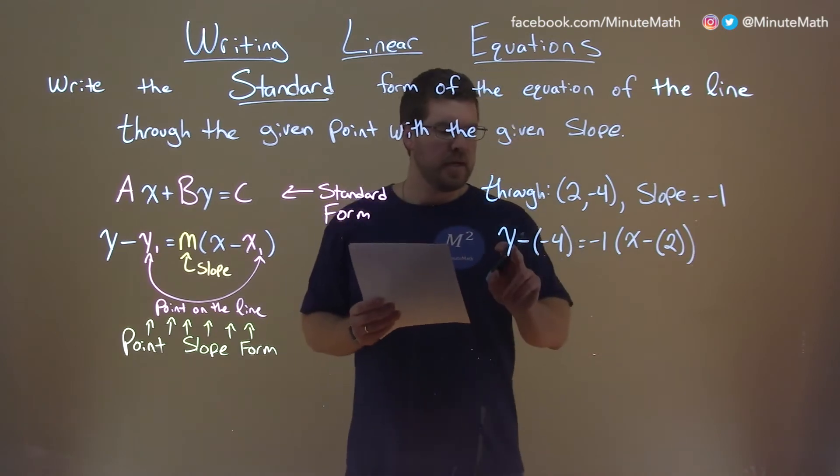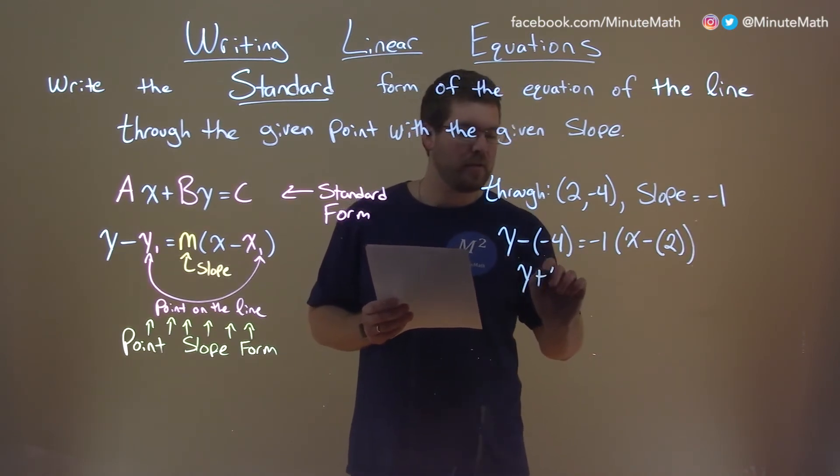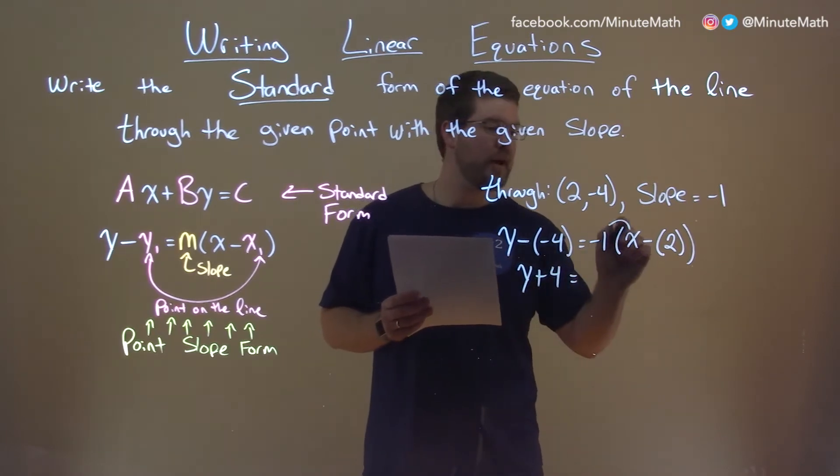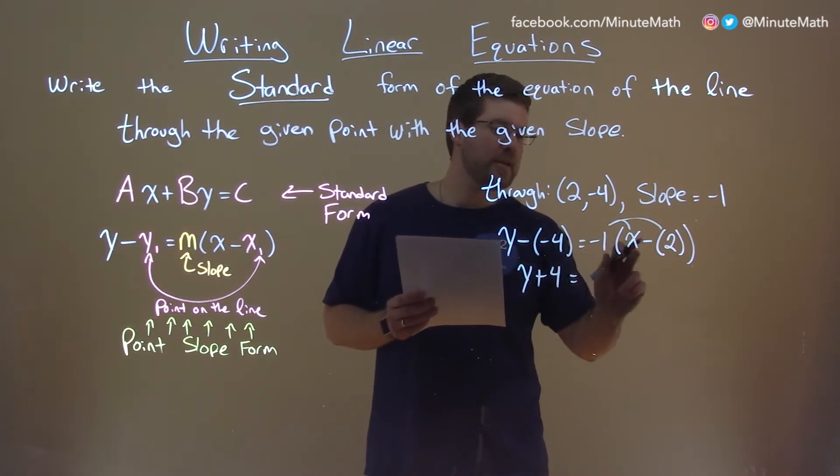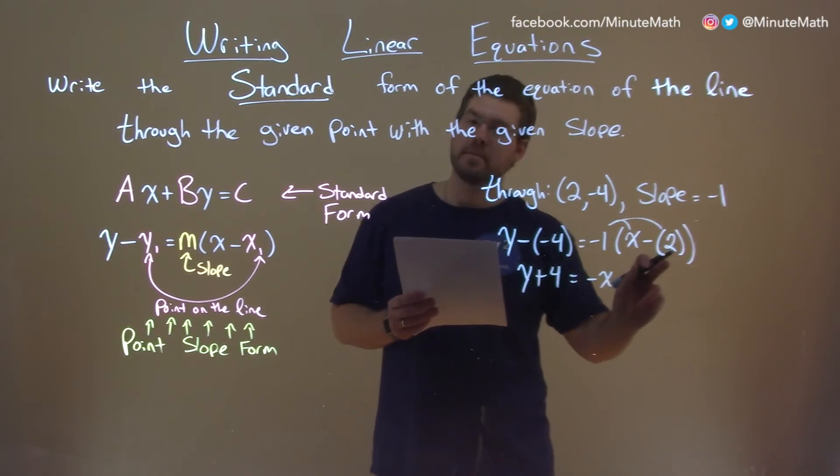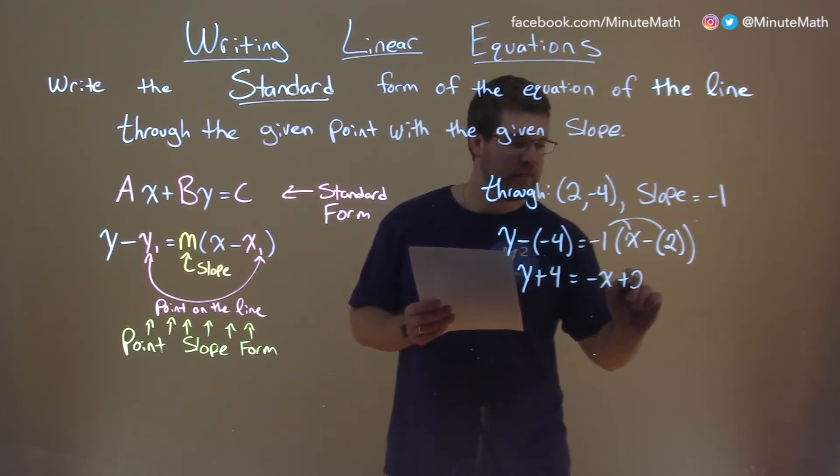Simplify first. y minus a negative 4 is like adding a 4. y plus a 4. Distribute the minus 1 here, and minus 1 times x is a minus x, minus 1 times a negative 2 is a positive 2.